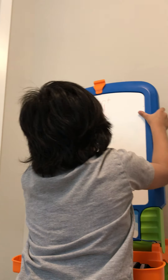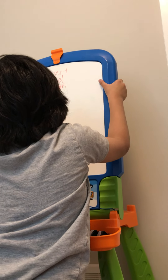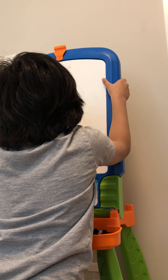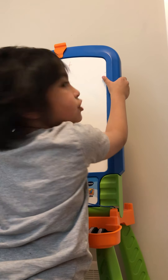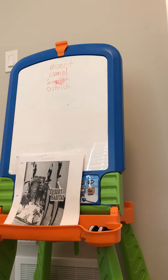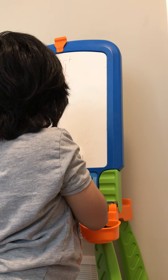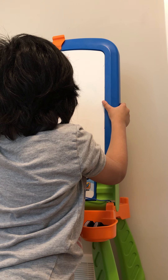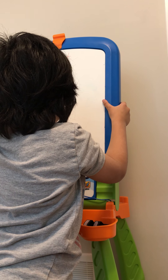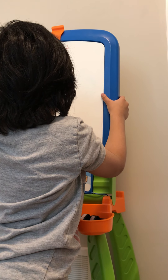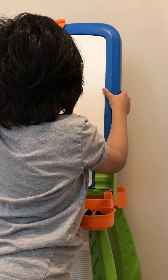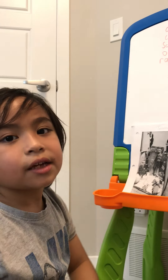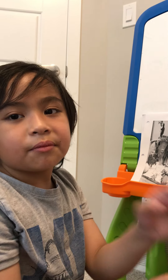This is a type of bird but it doesn't fly — Ostrich. Rattlesnake. It's kind of like a snake, and when the snake moves it makes a sound, because at the tail there's like a rattle.